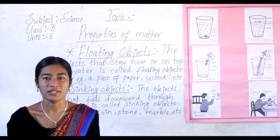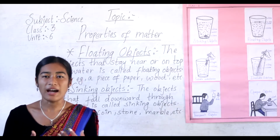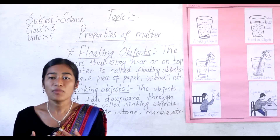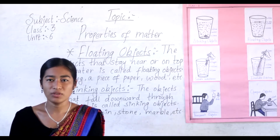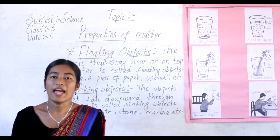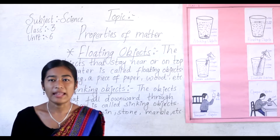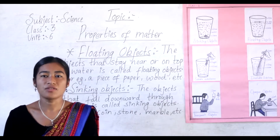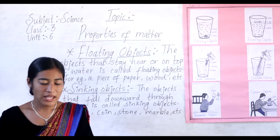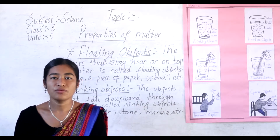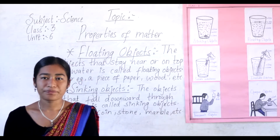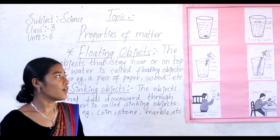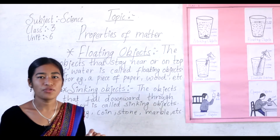These materials have different properties. Some of them are hard, some of them are soft. Some of them are rough and some are smooth, and some of them are heavy and some are light. So they are different from each other, and their properties are also different from each other. In this lesson we will learn some useful properties of matter.